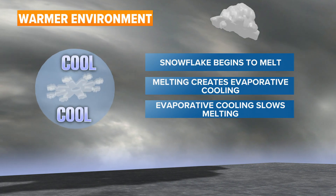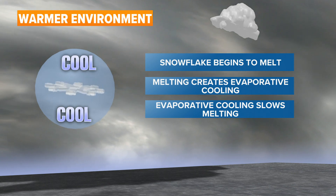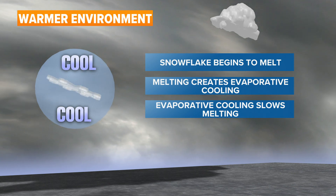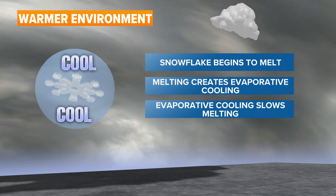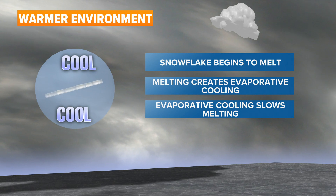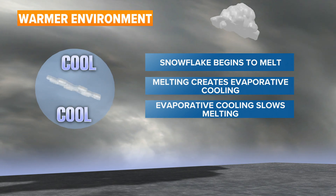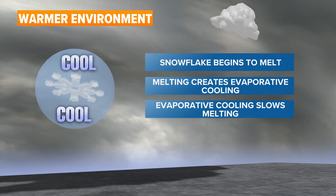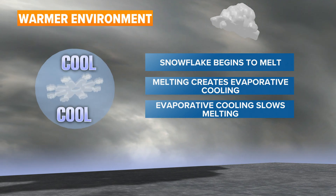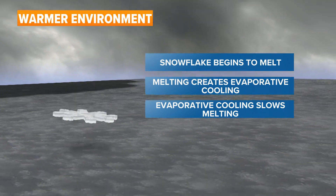Here's the catch: the melting process leads to evaporative cooling, which cools the air immediately surrounding the snowflake. This then slows the melting process of that snowflake. And if conditions are just right, the snowflake will make the trip all the way to the ground.